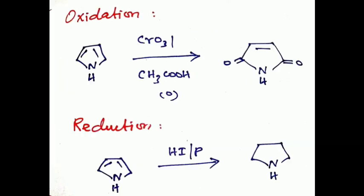Then oxidation: pyrrole can be oxidized with chromic oxide with acetic acid to form maleimide. Whereas in reduction, pyrrole reduced with hydrogen iodide in the presence of phosphorus to form tetrahydropyrrole. These two reactions are very important.